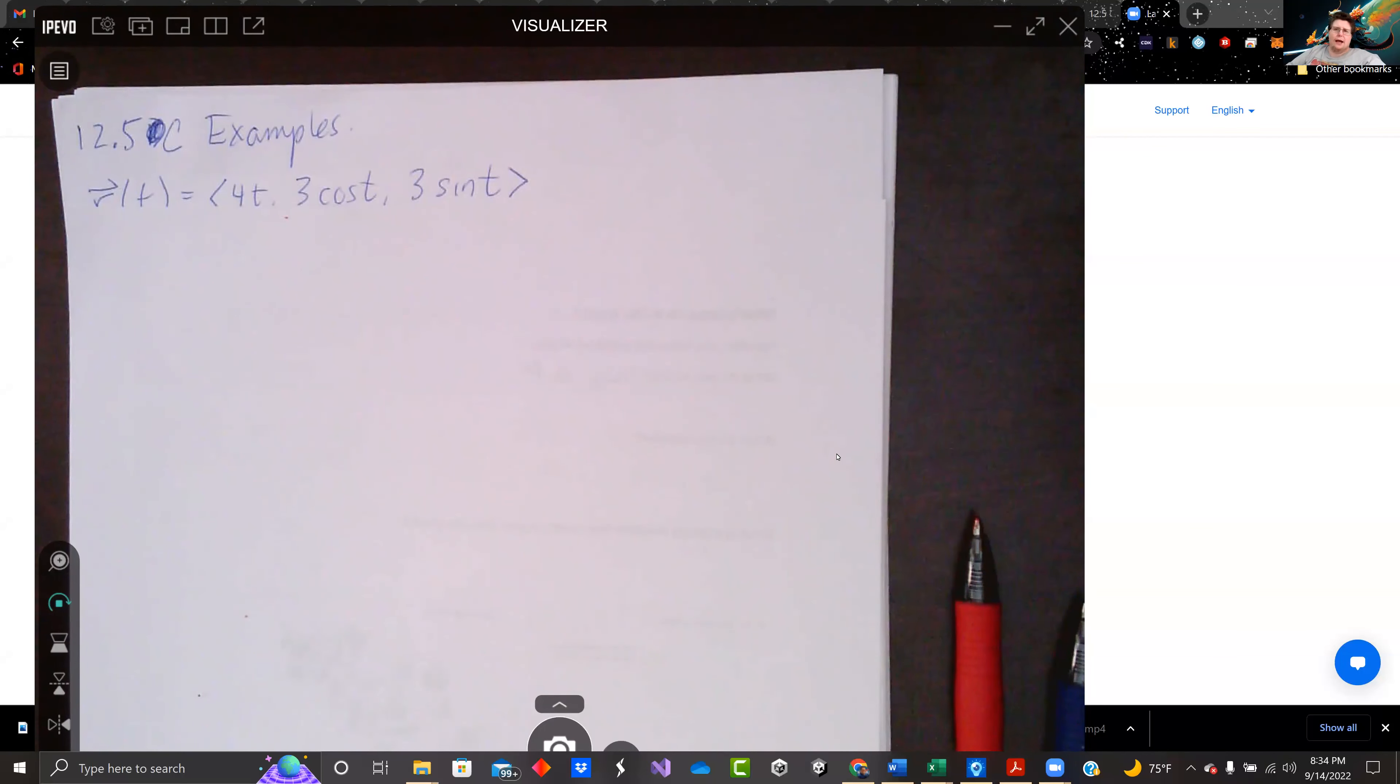Hey there, everybody. Welcome back. We are still working on curvature of a curve, what it is at any given point. This is 12.5 in Calculus 3. We're using the 11th edition of Anton. Let's just jump right into it.